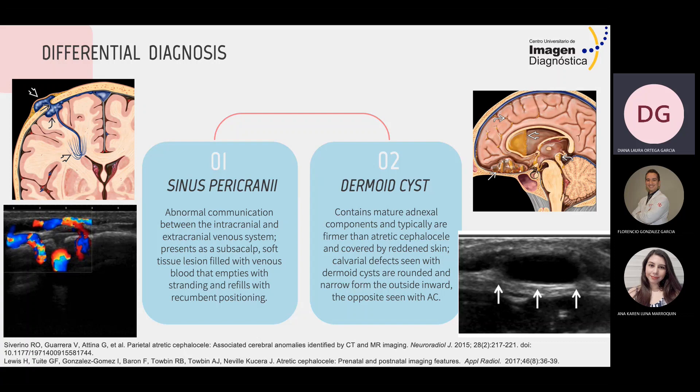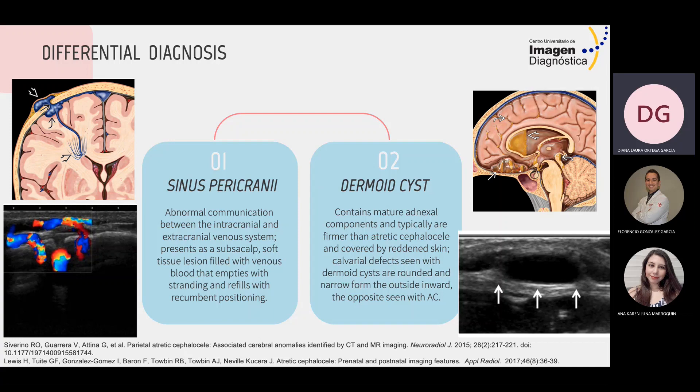Sinus pericranii is an abnormal communication between the intracranial and extracranial venous system. It presents as subscalp soft tissue lesions filled with venous blood that engorges with straining and refills with recumbent position, and we can observe these characteristics on ultrasound.